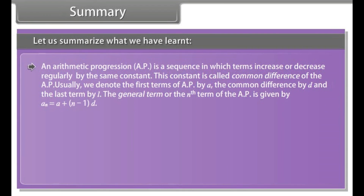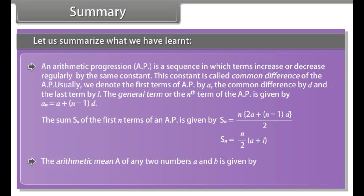An arithmetic progression (AP) is a sequence in which terms increase or decrease regularly by the same constant, called the common difference. We denote the first term of an AP by a, the common difference by d, and the last term by l. The general term (nth term) and the sum Sn of the first n terms of an AP are given by their respective formulas. The arithmetic mean A of any two numbers a and b is given by A = (a + b)/2, meaning the sequence a, A, b is an AP.